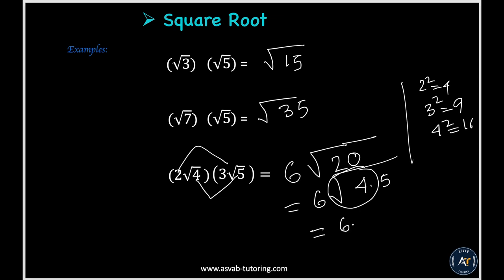So that will give you 6 times 2 is square root of 5. So if you simplify that, that will give you 6 times 2 is 12 square root of 5.